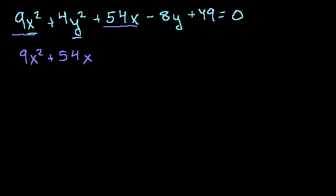And let's do the y terms in magenta. So then you have plus 4y squared minus 8y. And then you have this plus 49 is equal to 0.